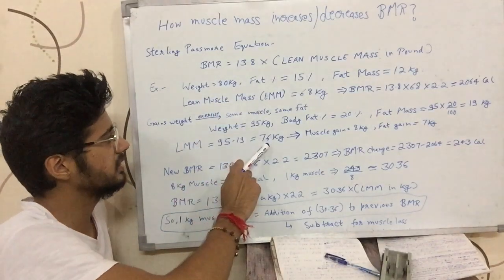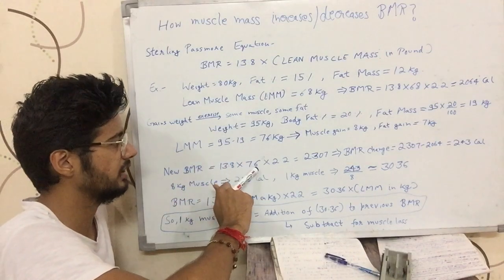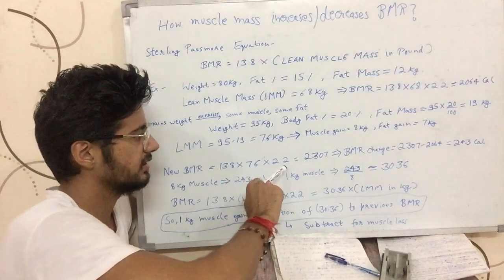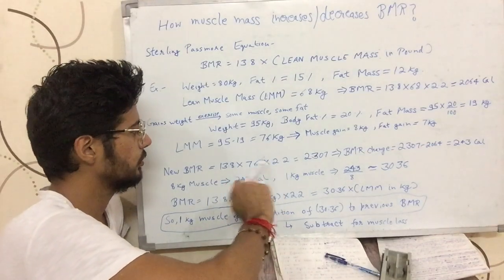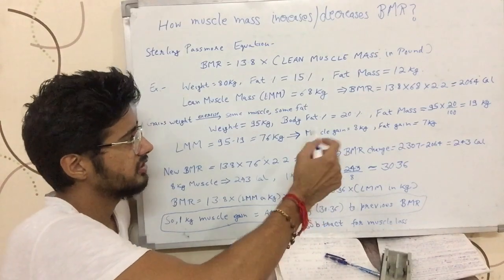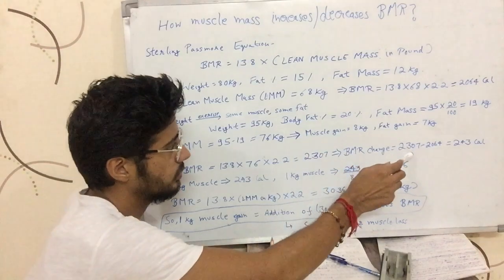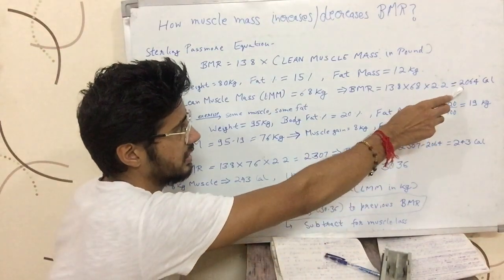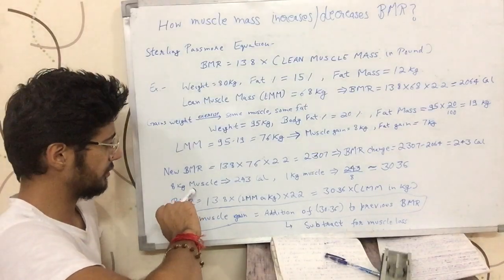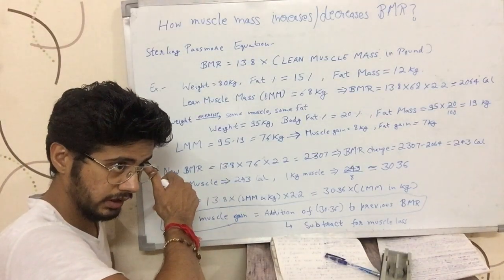On his new lean muscle mass of 76, his new BMR is 13.8 into 76 into 2.2. Converting 76 into pounds by multiplying it by 2.2, it comes out to be 2,307. The change in BMR by gaining 8 kilograms of muscle is 2,307 minus 2,064, his earlier BMR, which is 243 calories. So gaining 8 kilograms of muscle, his BMR went up by 243 calories.